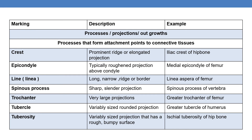Now coming to processes that form attachment points for connective tissues. The first is crest — a prominent ridge or elongated projection. An example is the iliac crest of the hip bone. Next is epicondyle — a typically rough projection above the condyle. An example is the medial epicondyle of the femur.